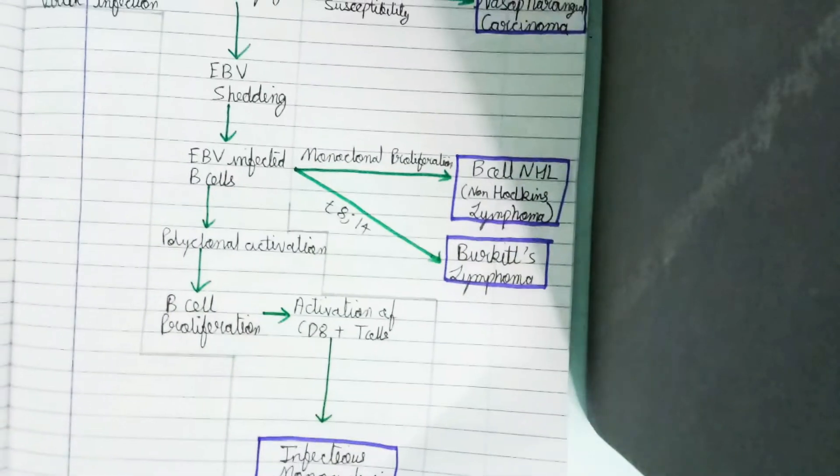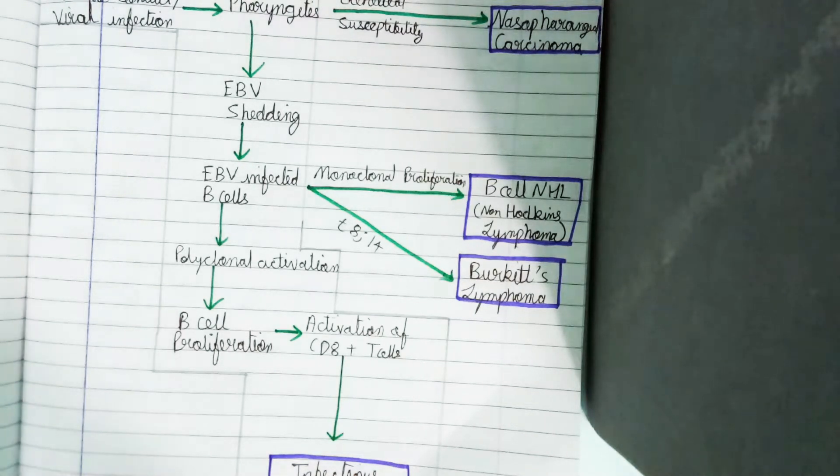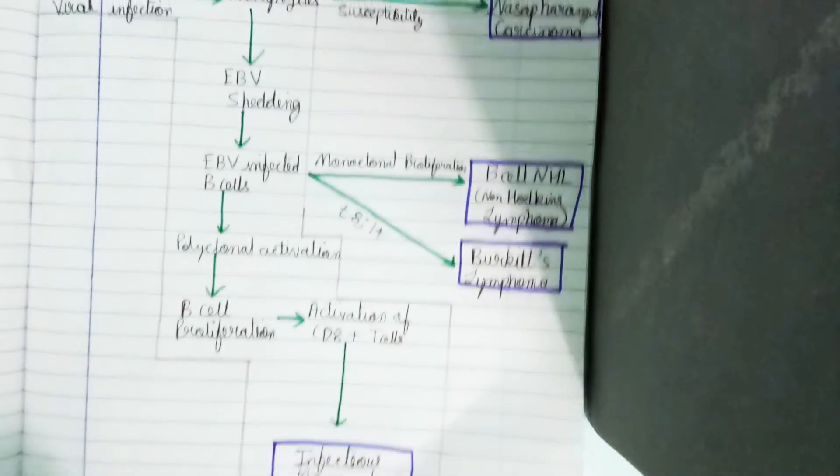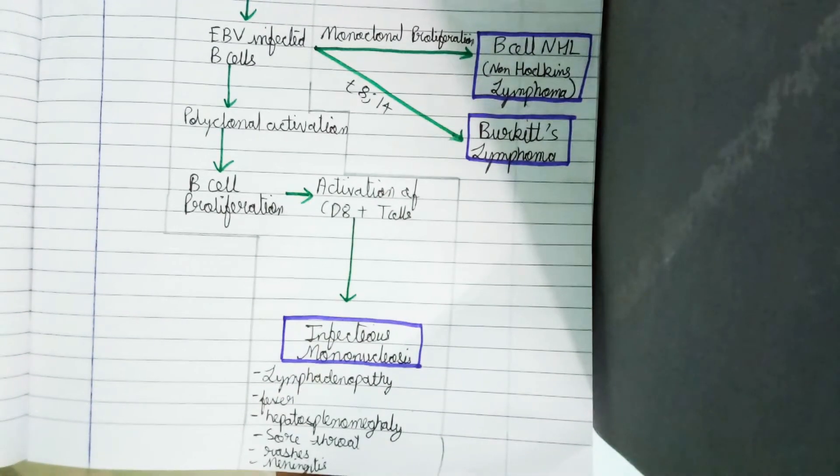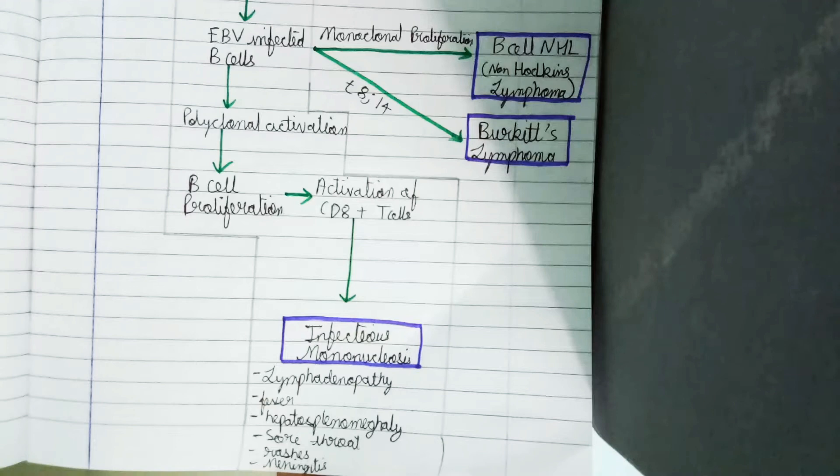Here the pathogenesis of two other diseases—non-Hodgkin's lymphoma and Burkitt's lymphoma—are discussed. In the middle stage, if the EBV-infected B cells undergo monoclonal proliferation, it causes B cell NHL. If T8 and T14 cell translocation occurs, it causes Burkitt's lymphoma. But we are focused on infectious mononucleosis, which is due to CD8+ T cell activation.